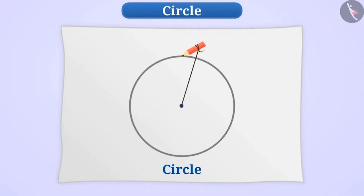Since we have kept the length of the thread equal, we can say that all the points of the circle are at an equal distance from this fixed point.